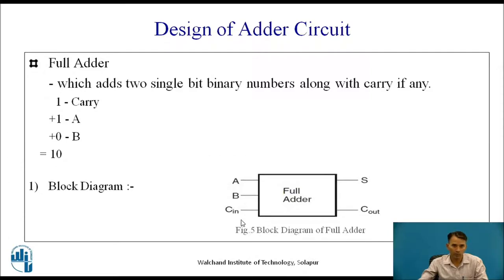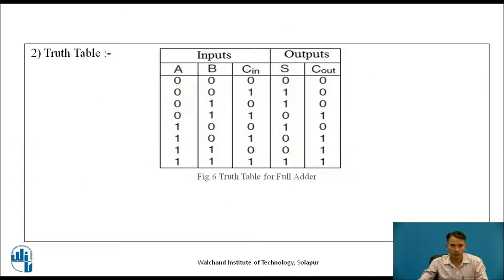As we have carry input here, the inputs are A, B, and C-in, and outputs are sum and carry-out. Based on the block diagram, let us write the truth table. As we have three inputs A, B, and C-in, there will be a total of eight combinations of input, and we are getting sum for the combinations when A, B, C-in are 0,0,1; when 0,1,0; when 1,0,0; and when 1,1,1.